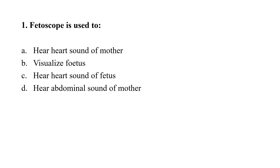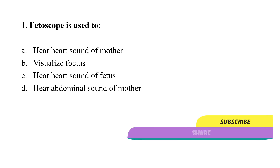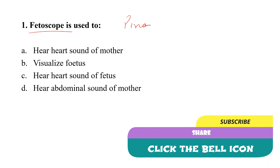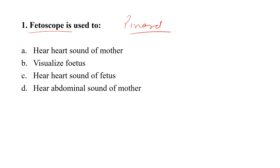Question number 1: Phytoscope is used to — option A: hear heart sound of mother; option B: visualize fetus; option C: hear heart sound of fetus; option D: hear abdominal sound of mother. Phytoscope, also called the Pinard phytoscope, is used to hear the heart sound of the fetus, so the correct option is option C.